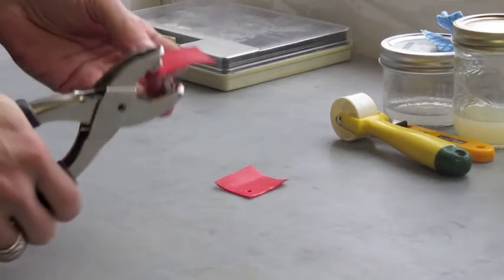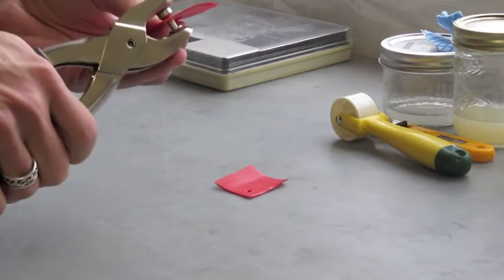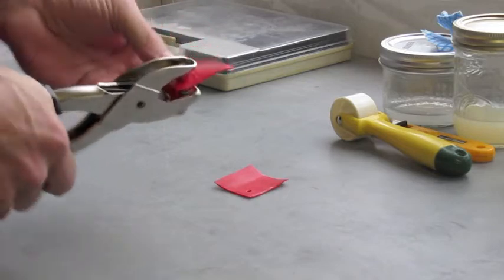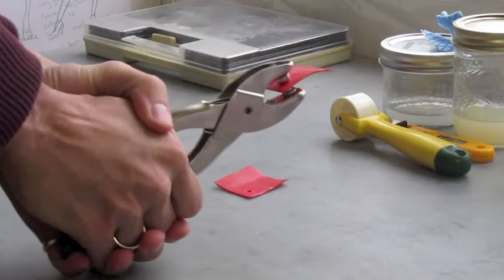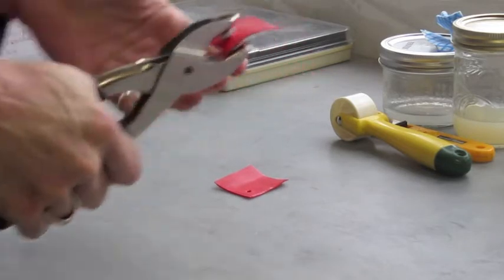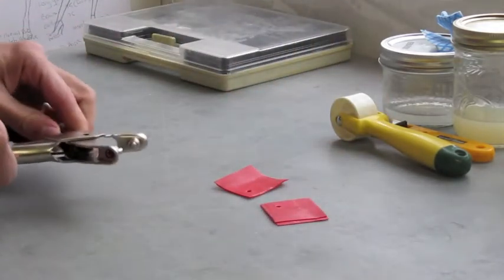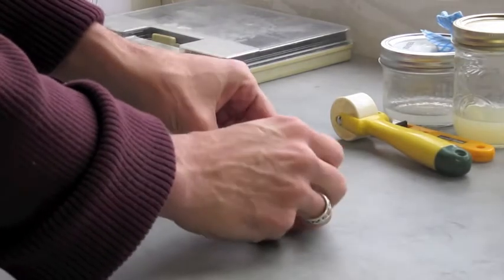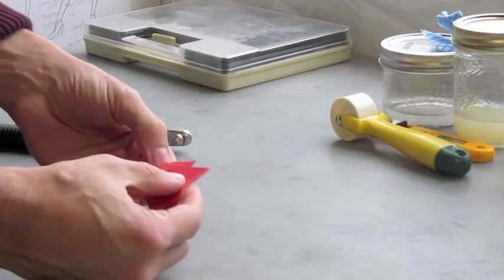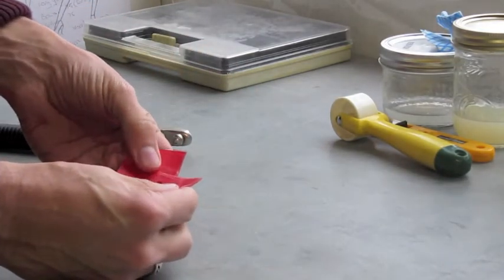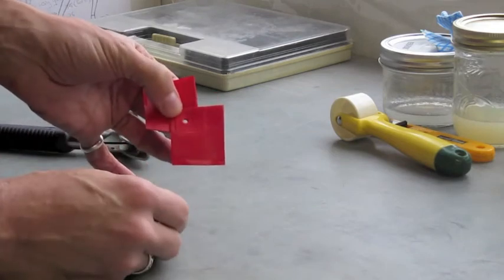Now punch a matching hole in the second piece. You now have two pieces of reinforced latex with matching holes to accept a rivet.